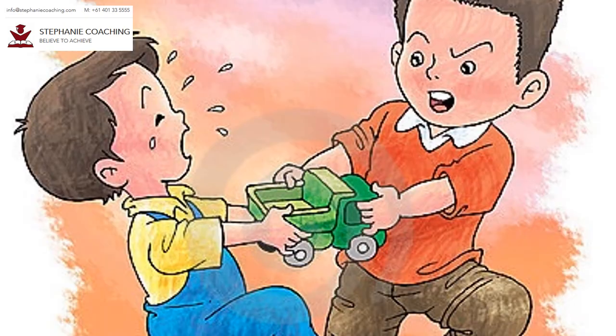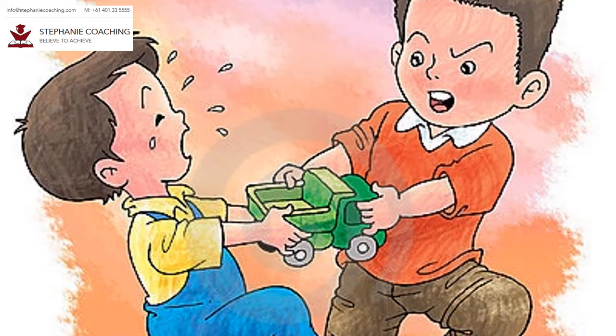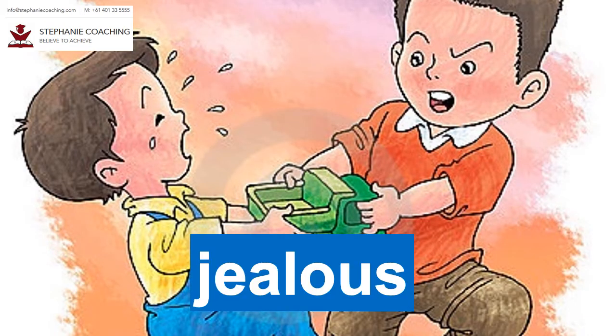Word number 7 is jealous. My son, baby William, is always jealous of his sister Elizabeth. He snatches her toys, grabs her food and fights for attention. Do you have a brother or sister who is always jealous of you and does mean things to you?